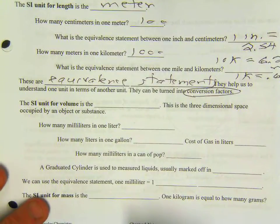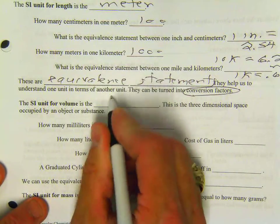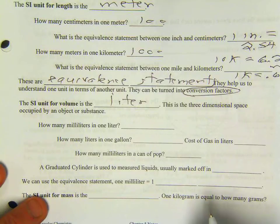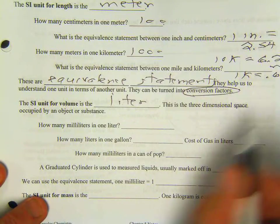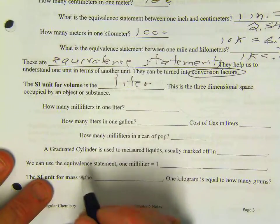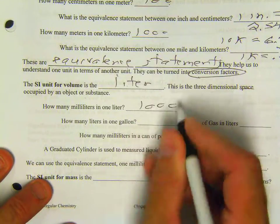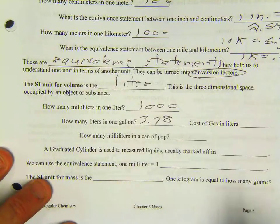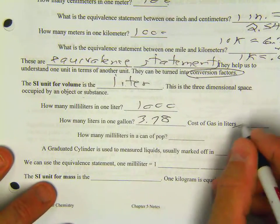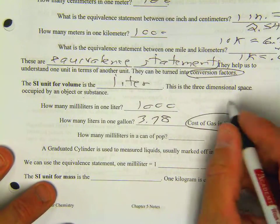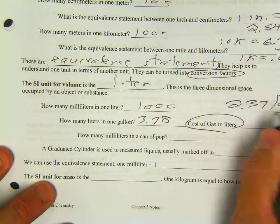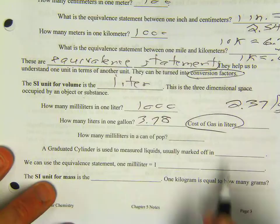The SI unit for volume is the liter. This is the three-dimensional space occupied by an object or substance. How many mLs in one liter? That would be 1,000. How many liters in one gallon? That would be 3.78. Cost of gas in liters, I'll let you figure that out. I'd go about 2.37 per gallon. See if you can figure that out. We'll go over that Monday.